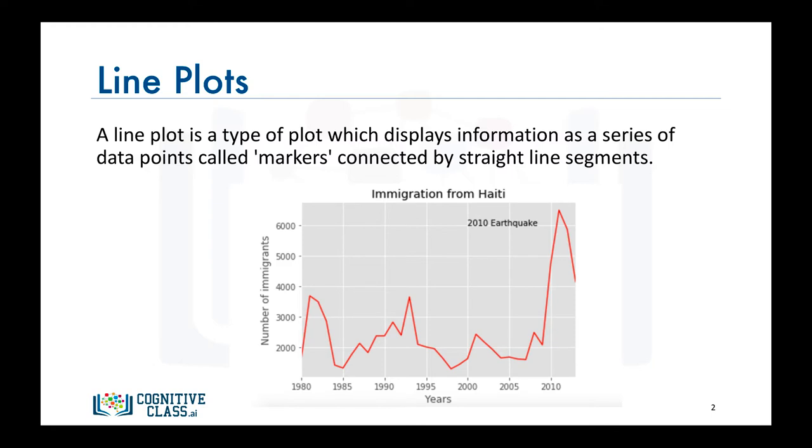Based on this line plot, we can then research for justifications of obvious anomalies or changes. So in this example, we see that there is a spike of immigration from Haiti to Canada in 2010.